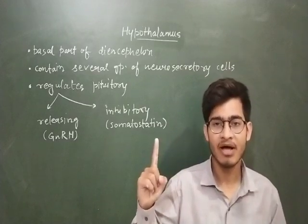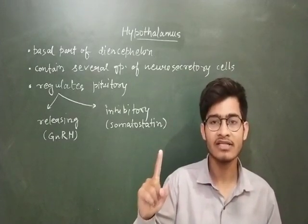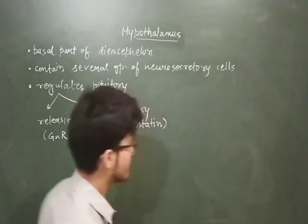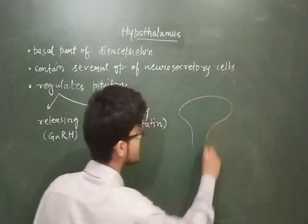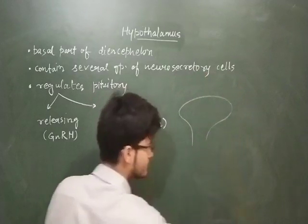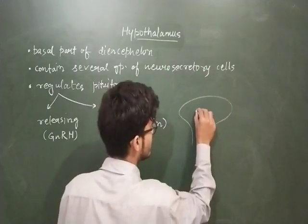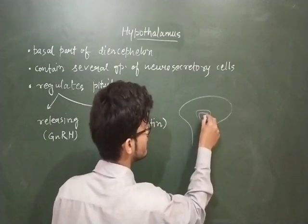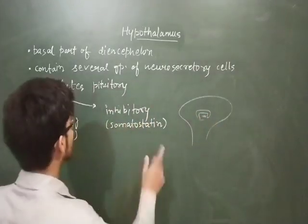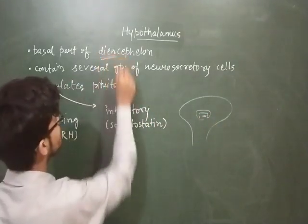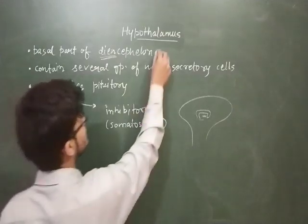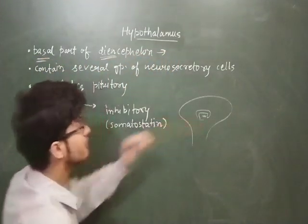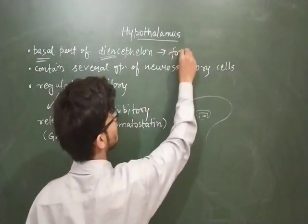First let's talk about the location. The hypothalamus is present in the diencephalon of the forebrain. In the last lecture we made a diagram showing the hypothalamus present here and the pineal gland there. More specifically, it is present in the basal part of diencephalon — the base of diencephalon in the forebrain.